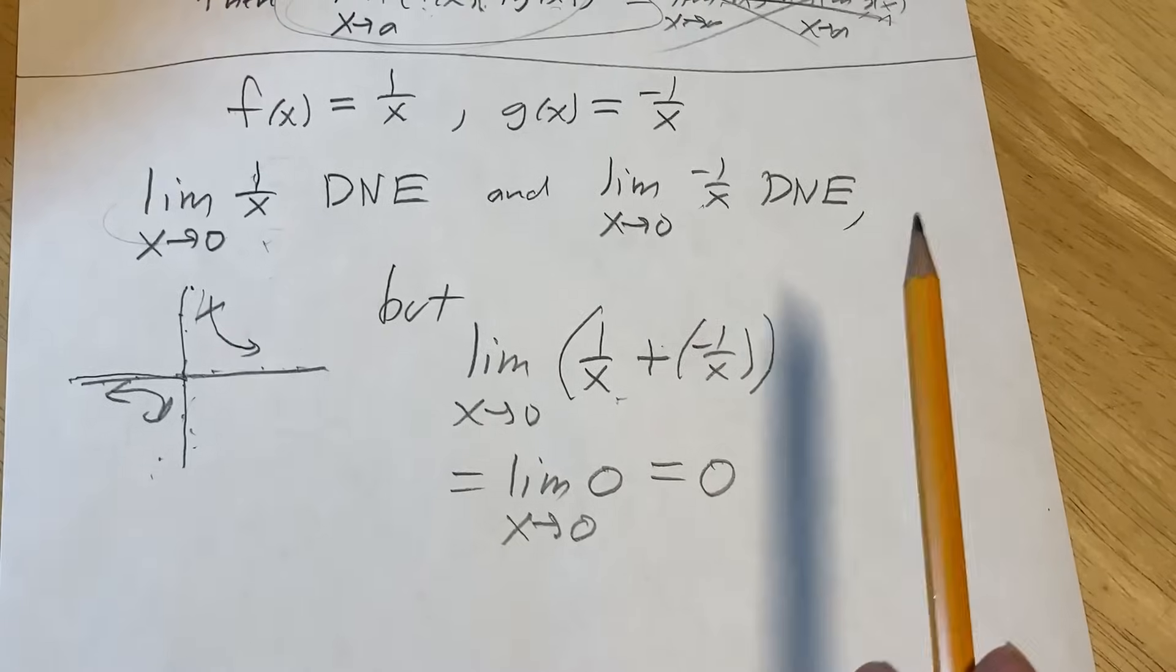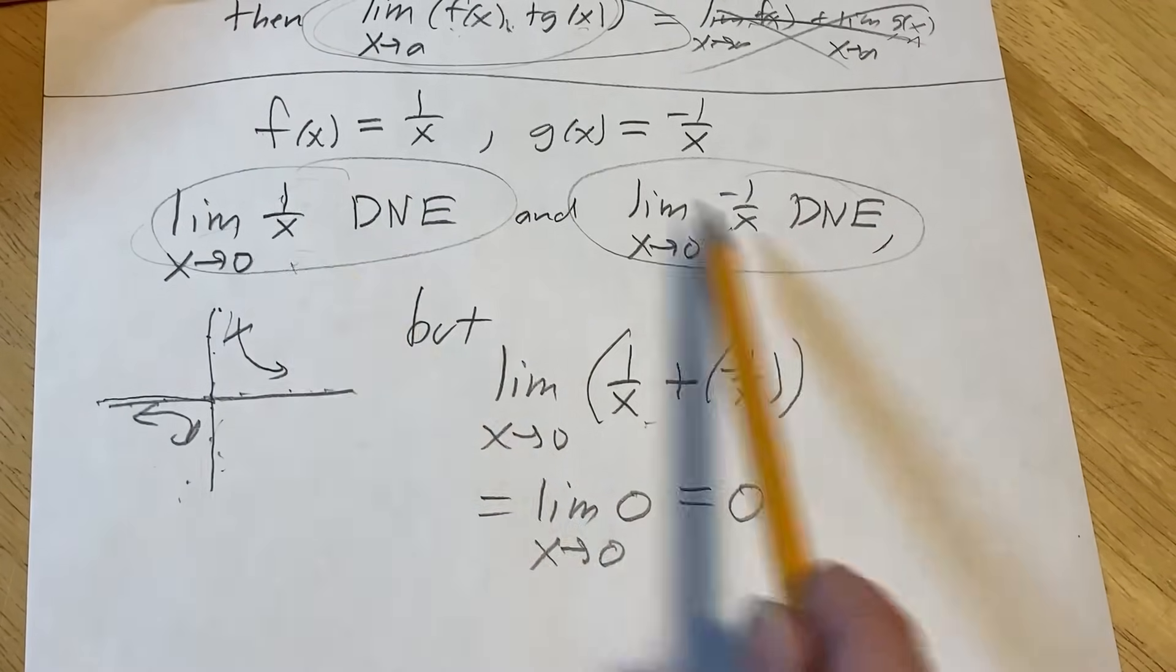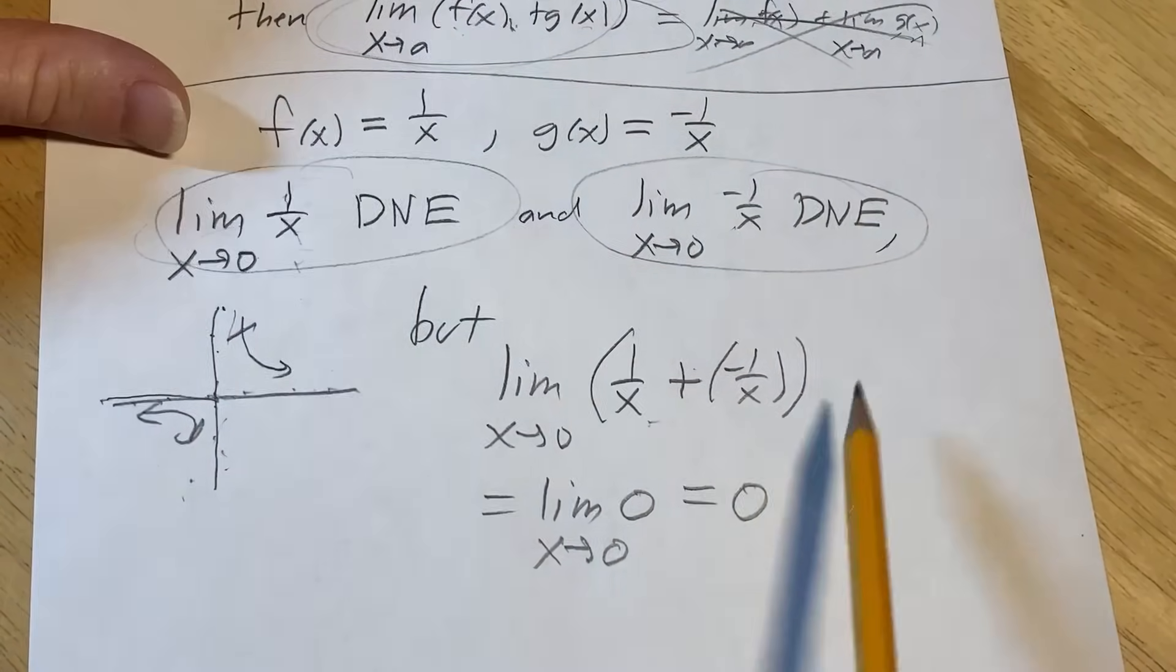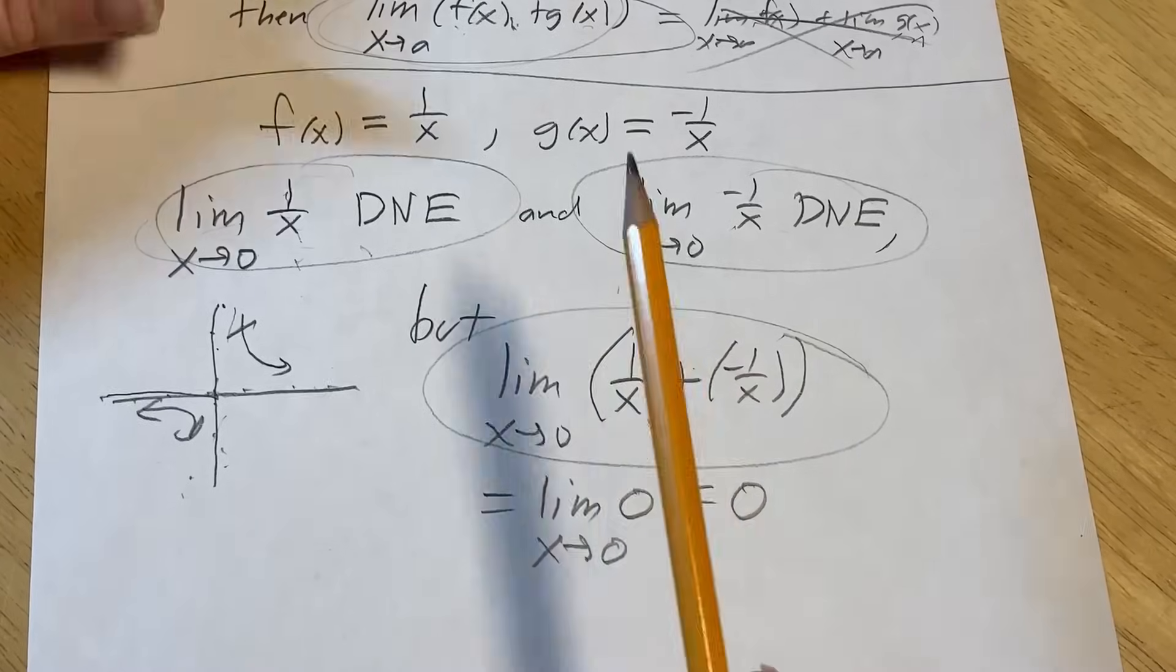So we have an example of two limits that don't exist, but when you add up the functions and take the limit, it does exist. Just because the sum exists doesn't mean the individual limits exist. And so the point is here, when you're doing a proof.